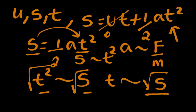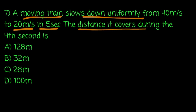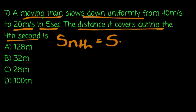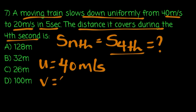A moving train slows down uniformly from 40 m per second to 20 m per second in 5 seconds. What is the distance it covers during the first second? The initial speed is 40 m per second and the final speed is 20 m per second.